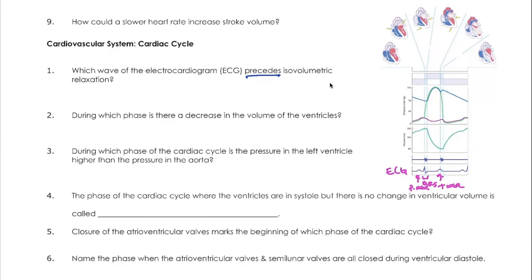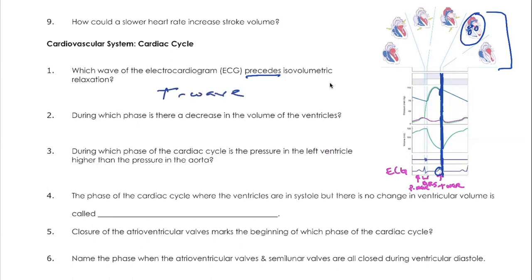So which wave comes before isovolumetric relaxation? Looking at the diagram, we can see this period of isovolumetric relaxation where the semilunar valves are closed and the AV valves are still closed — all valves are closed, so there's no volume change in the ventricle. That's isovolumetric, and the heart is relaxing. The T wave precedes isovolumetric relaxation.